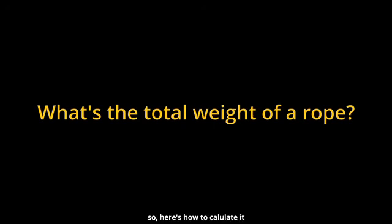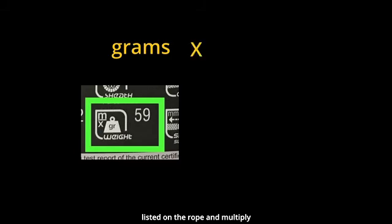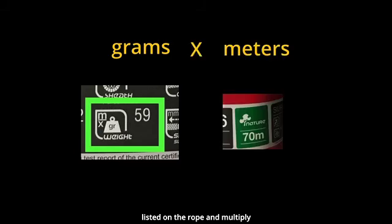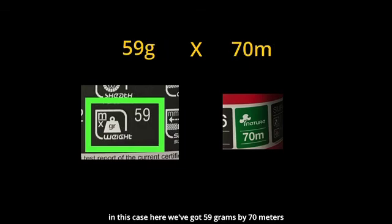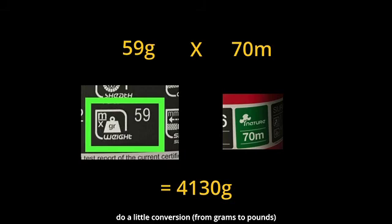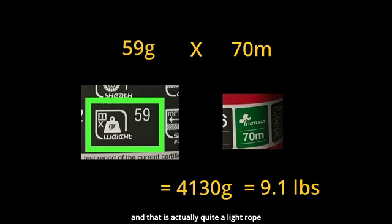So here's how to calculate the total weight of a rope. You're going to take the number of grams listed on the rope and multiply that by the number of meters. So in this case here, we've got 59 grams by 70 meters. Do a little conversion and that equals 9.1 pounds. And that is actually quite a light rope.